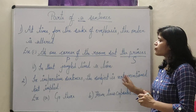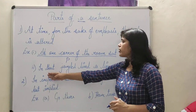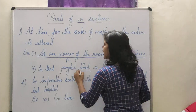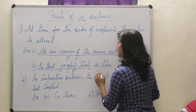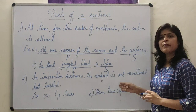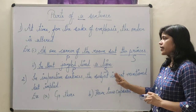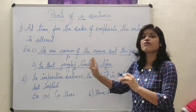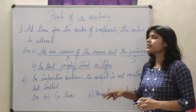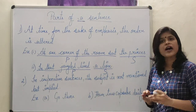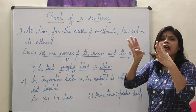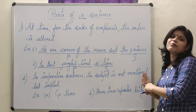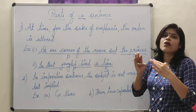In the second example: 'In that jungle lived a lion.' Here also 'in that jungle lived' is the predicate and 'a lion' is the subject. The stress is given that the lion is in that jungle, which is why the predicate came first and the subject came after. So when you need to stress or emphasize something, predicate will come first and subject will come after.